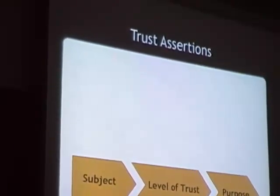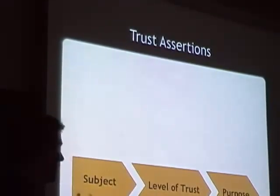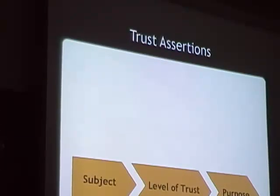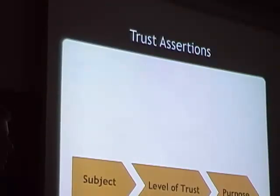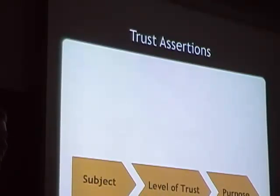The three components are: a subject, a level of trust, and a purpose. A subject might be a fingerprint, a certificate, or a public key. A level of trust might be trusted, distrusted, or might have an introducer level of trust. And a purpose — trust without a purpose is something you don't see very often in the real world. You trust your bank with your money, your school with your kids, but not necessarily vice versa. There's very little carte blanche trust in the world.